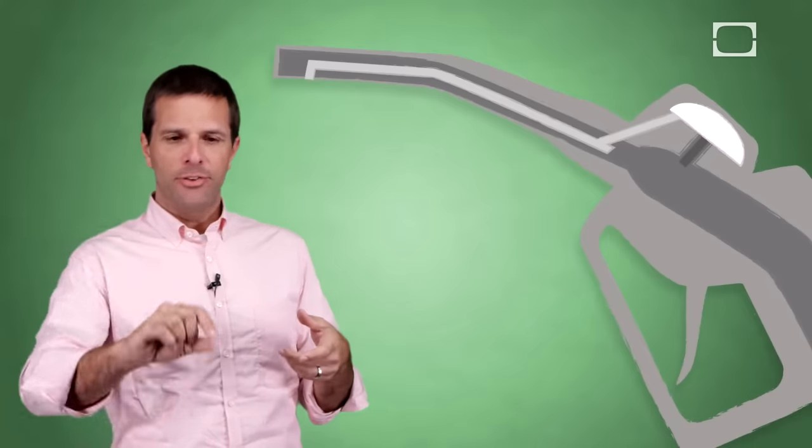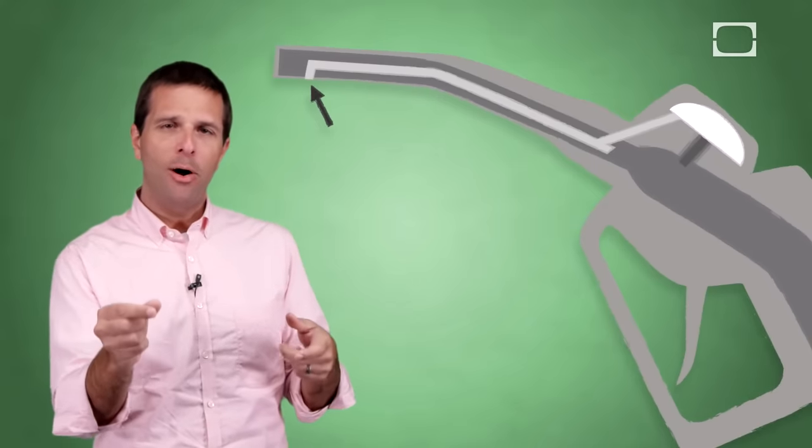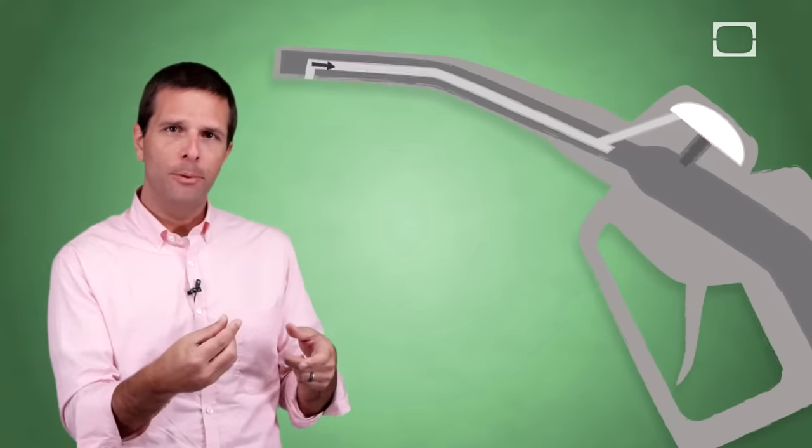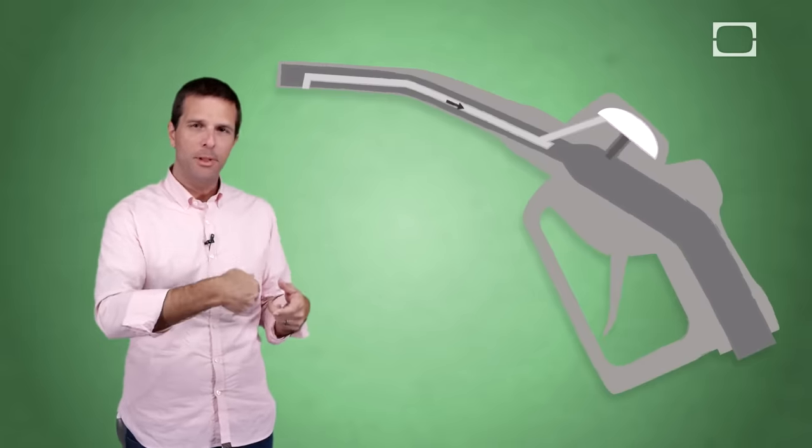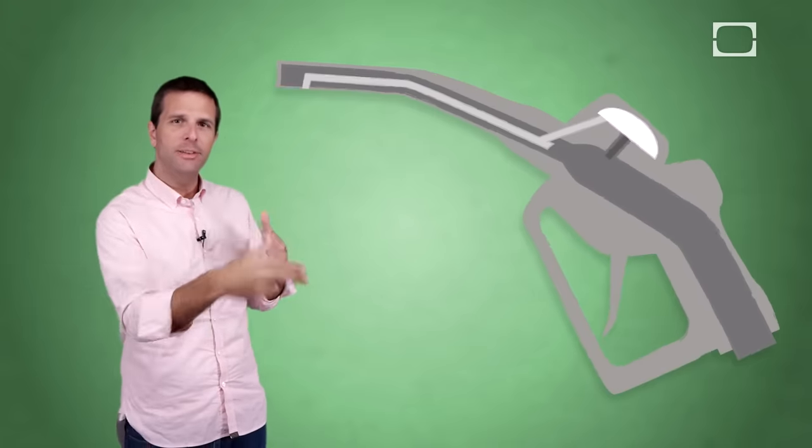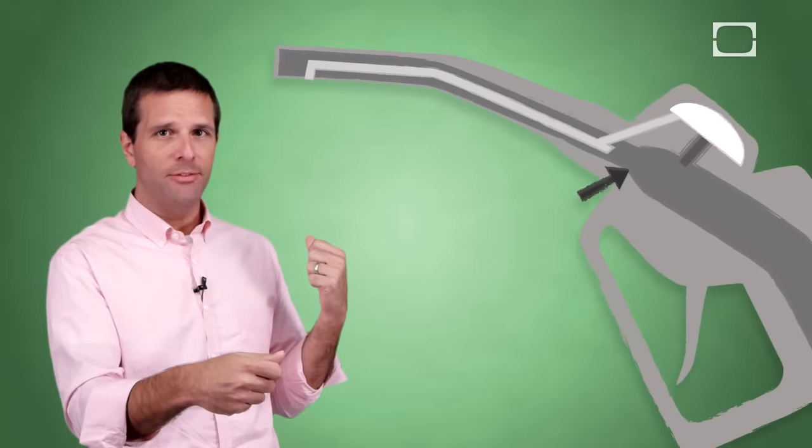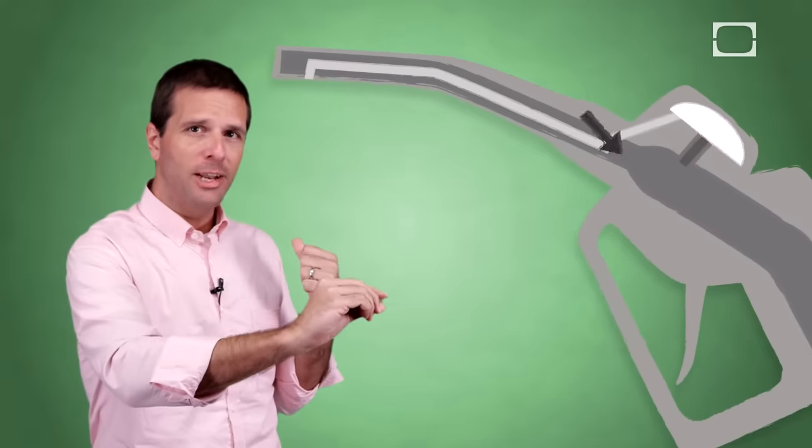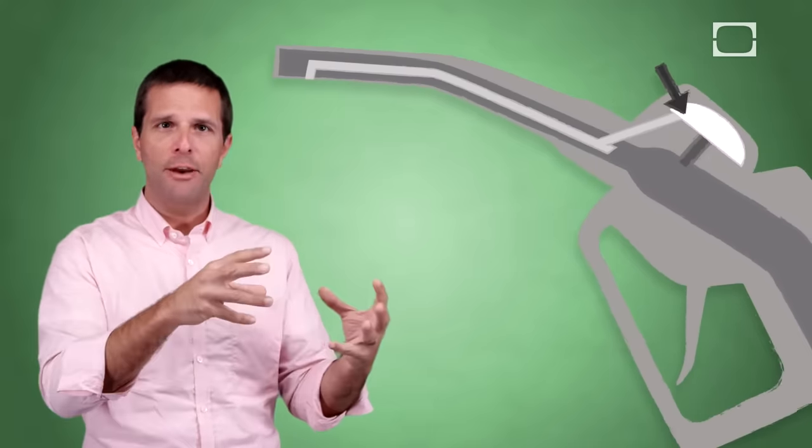If you look at a gas nozzle, you'll see a little hole toward the end. And that hole actually leads to a tube. Now that tube runs all the way up the length of the gas nozzle, and it usually tees off. On one side, you've got a Venturi tube. On the other side, you've got a tube leading to a diaphragm of air.